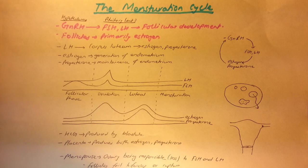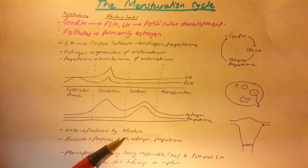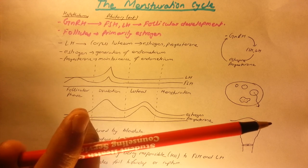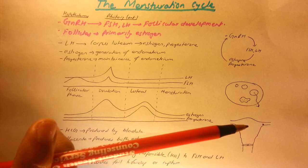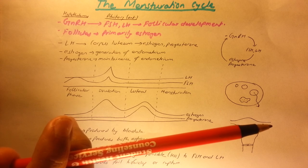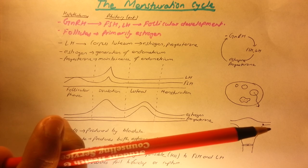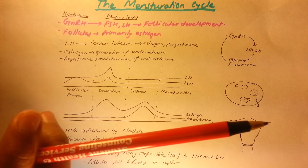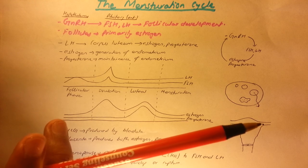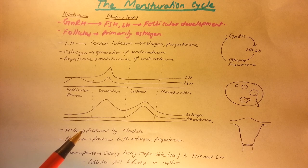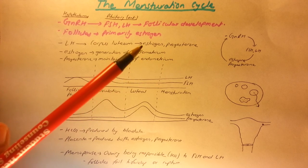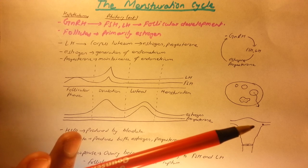Now let's talk a little about pregnancy. If fertilization happens — sperm and egg meet, usually in the fallopian tube — and the cells start dividing, forming an embryo, the embryo moves to the uterus where the baby develops. If the embryo settles in the fallopian tube instead, it's called an ectopic pregnancy, which is dangerous and can result in rupturing of the fallopian tube and possibly death. During pregnancy, the developing embryo at the blastocyst stage produces human chorionic gonadotropin (HCG), which maintains the endometrium and keeps estrogen and progesterone high.